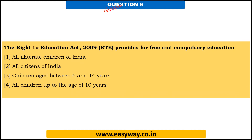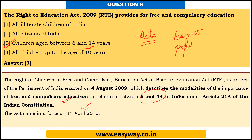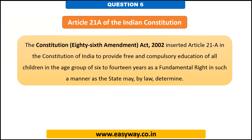Question number six: the Right to Education Act 2009 provides for free and compulsory education to which of the following segments? The answer is option three: children aged between six and 14 years. This revolutionary act came into force on 1st April 2010. For important acts, you need to be aware of in which year they were implemented and what is the target audience or population. Article 21A of the Indian Constitution, added through the 86th Amendment Act 2002, provides that India needs to give free and compulsory education to all children in the age group of six to 14 years as a fundamental right, and the Right to Education Act was enacted to give effect to this.